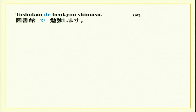As you already know, particles can be used in various ways in the language, and we have studied particle de for action earlier. For example, you have learnt toshokan de benkyoshimasu. So, place de, de action. Toshokan is library and benkyoshimasu you already know. At a place, an action is done.